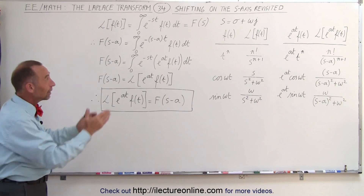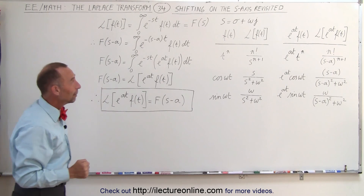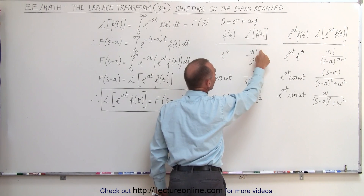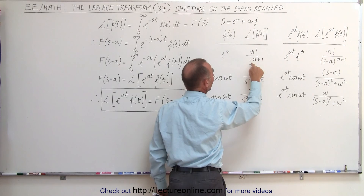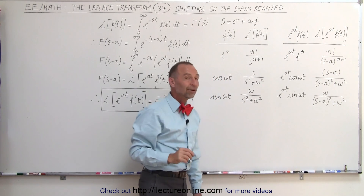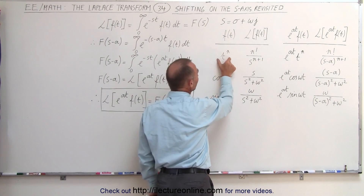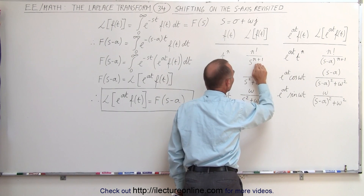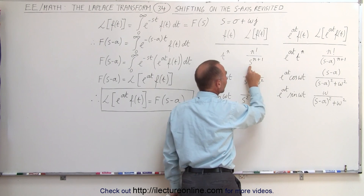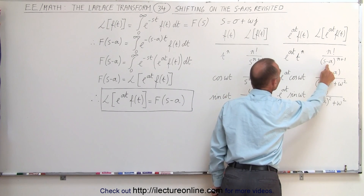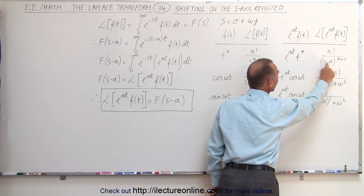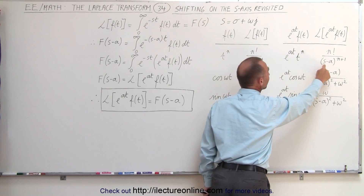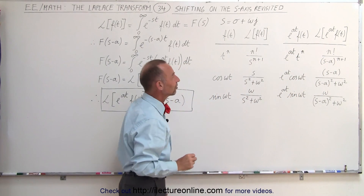To make that a little bit more clear, let's go to our tables. Remember that if our function was T to the N, the Laplace transform in the frequency domain is N factorial divided by S to the N plus 1. But if we multiply the time domain function by E to the A T, when we take the Laplace transform, it simply takes S and replaces it with S minus A. Notice if this is positive, we subtract it — so if it's E to the minus A T, this would become S plus A. It's always reversed in sign.